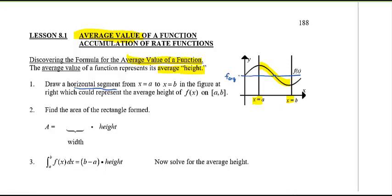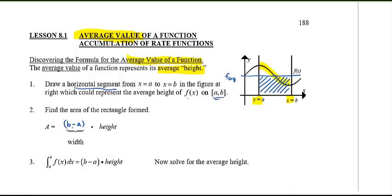I'll assume that is the approximate average height of f(x) on the interval from a to b. What we want to do first is find the area of the rectangle formed — the width times the height, where the width is b minus a and the height is the average height. The key point is: the area of the rectangle equals the area under the curve from a to b.